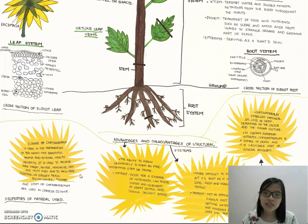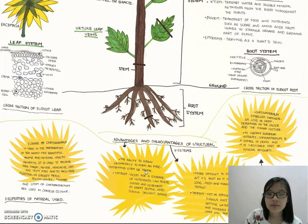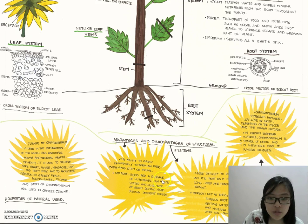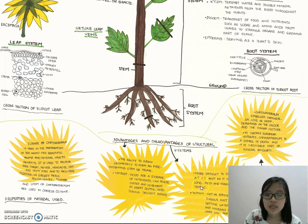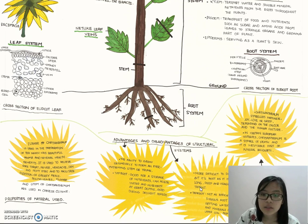The advantages and disadvantages of the structural system: The advantage is the ability to grow secondary growth from an ever-widening stem or trunk, which can grow many flowers on each stem. The tap root is good for storage of nutrients and can access water and nutrients at great depth. The disadvantage of the tap root is that it is not as efficient as a fibrous root at getting water and minerals from the upper soil.